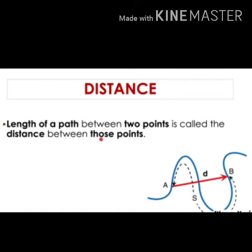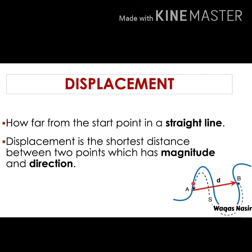Distance is shown by the capital letter S, which is marked in the figure. The length of the path is basically the distance. Now we discuss displacement. Displacement is the shortest path covered between two points.